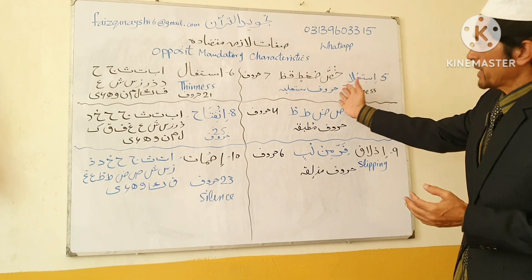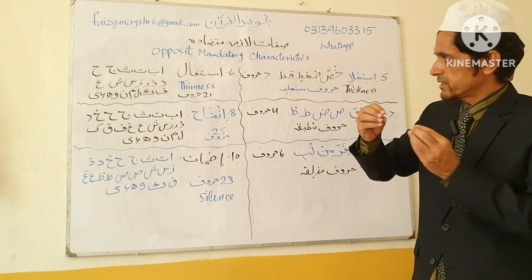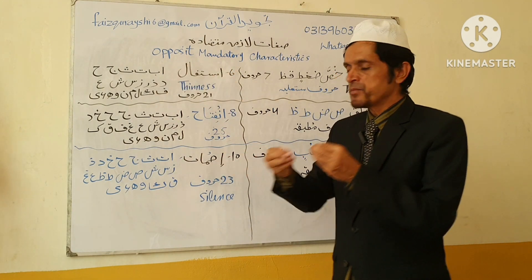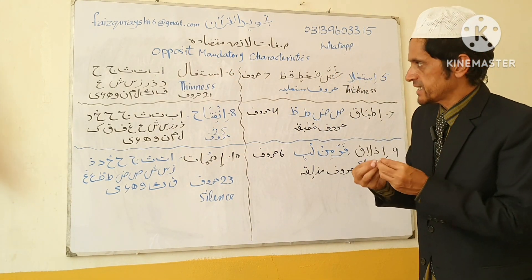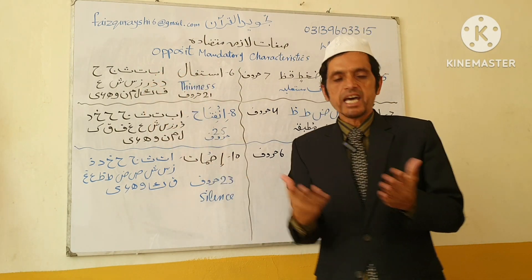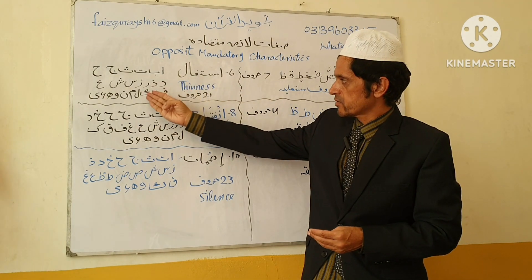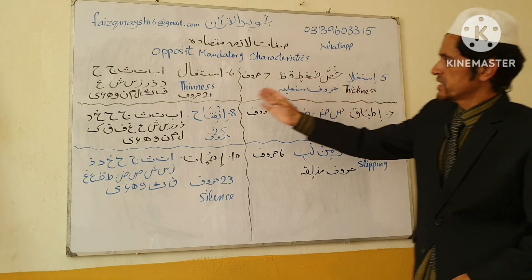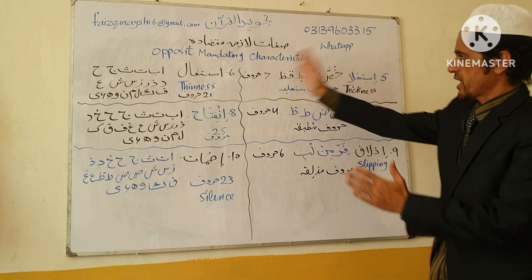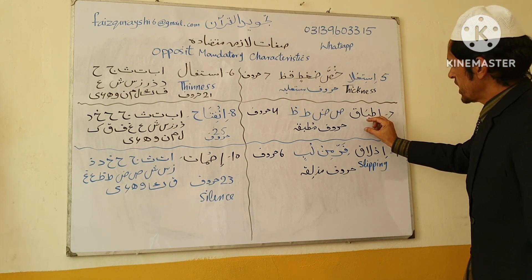As compared to Musta'aliyah letters, in Istifal letters the root of the tongue does not raise toward the palate, so these letters are articulated in a thin way. For example: Ta, Tha, Dal, Thal, Ra, Za, Sin, Sheen — as compared to the Musta'aliyah letters, these are opposite of each other. Now, Itbaq also means the middle of your tongue touches the palate.